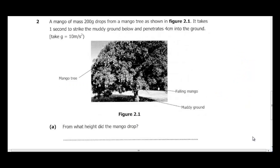Question 2 says a mango of mass 200 grams drops from a mango tree as shown in figure 2.1. It takes one second to strike the muddy ground and penetrate 4 cm into the ground. Take g to be 10 meters per second squared. Part A asks from what height did the mango drop.